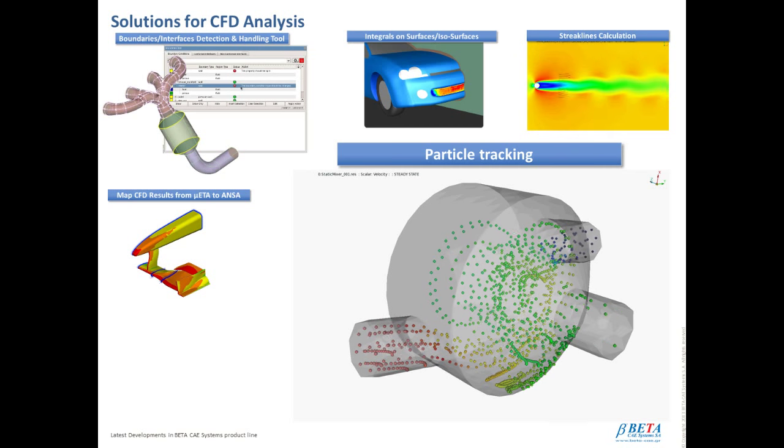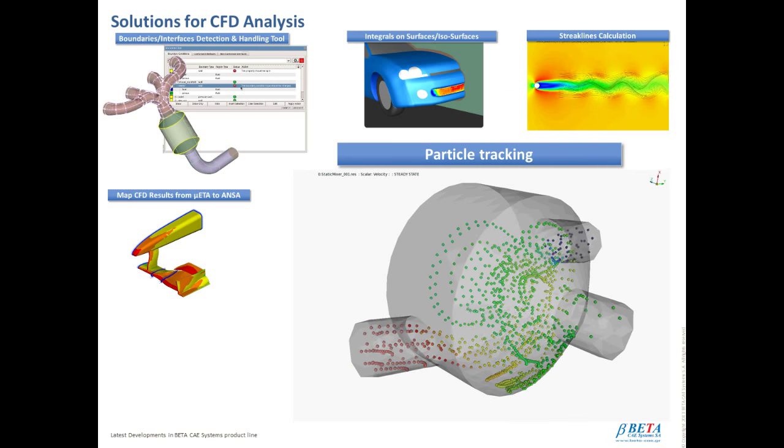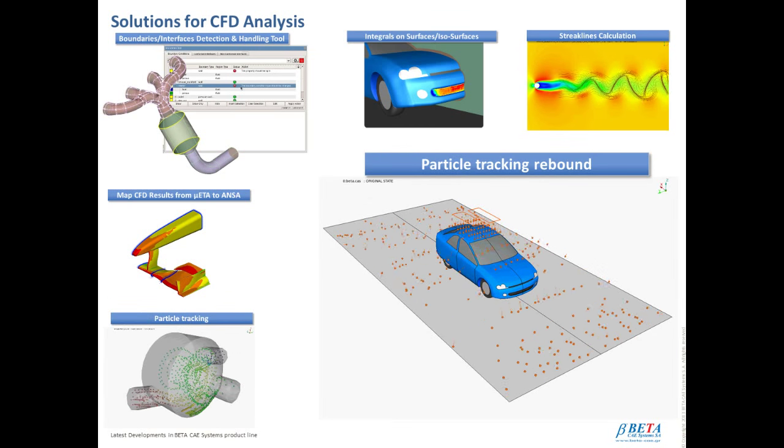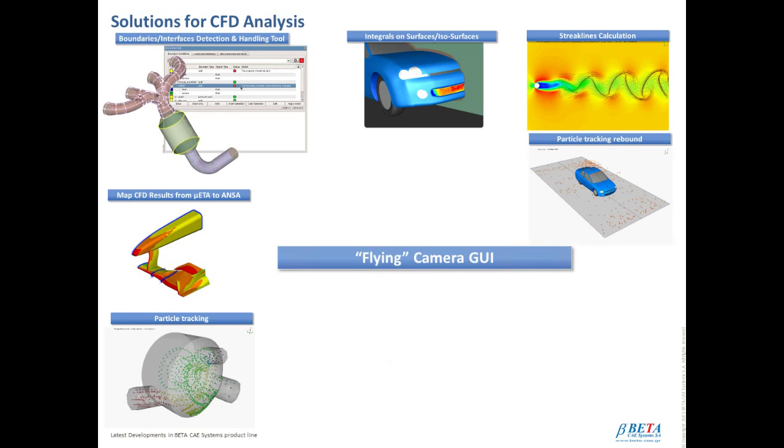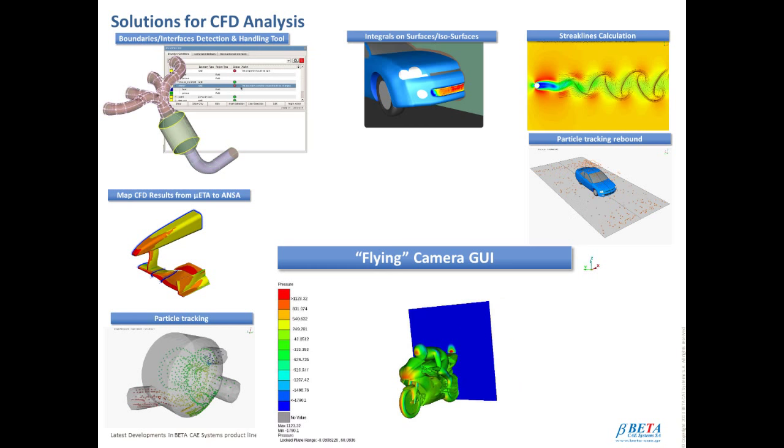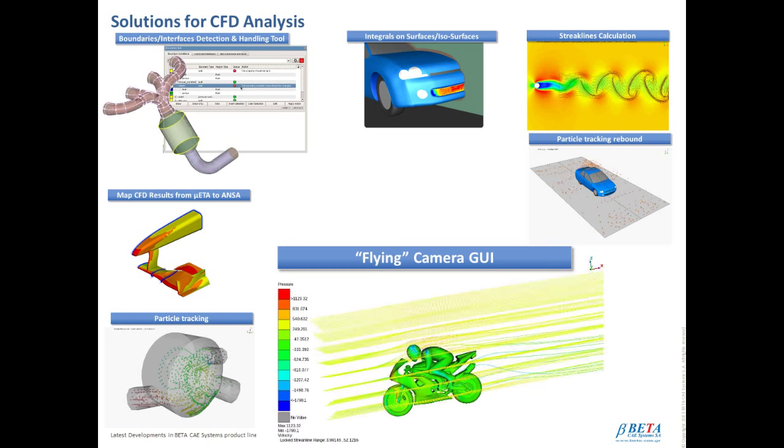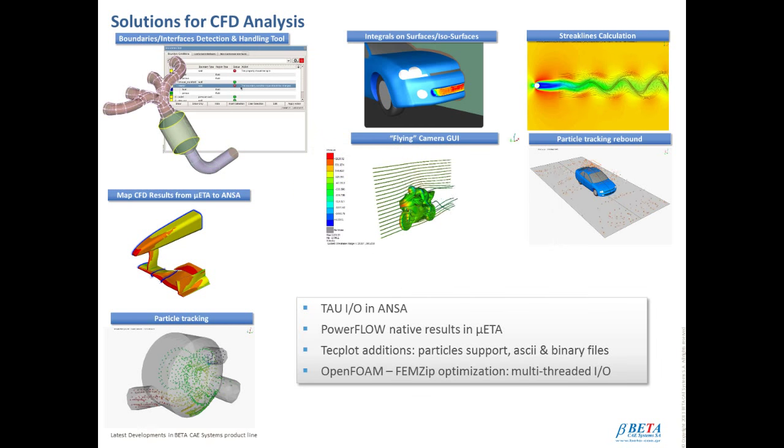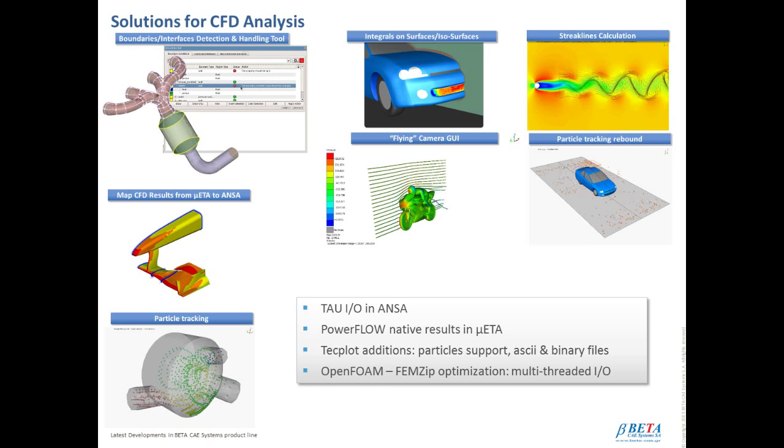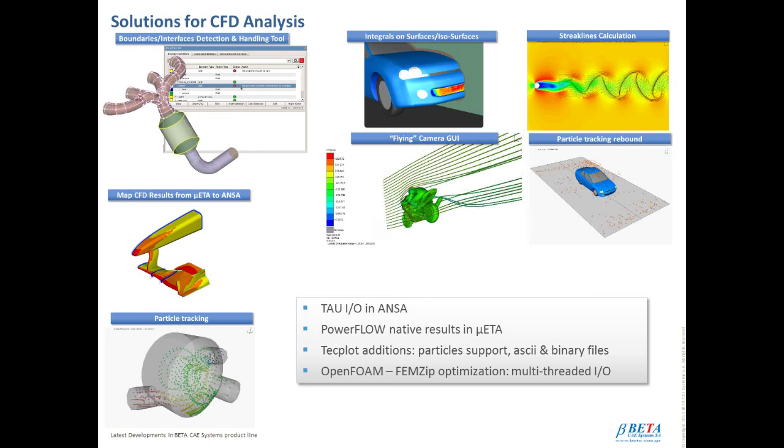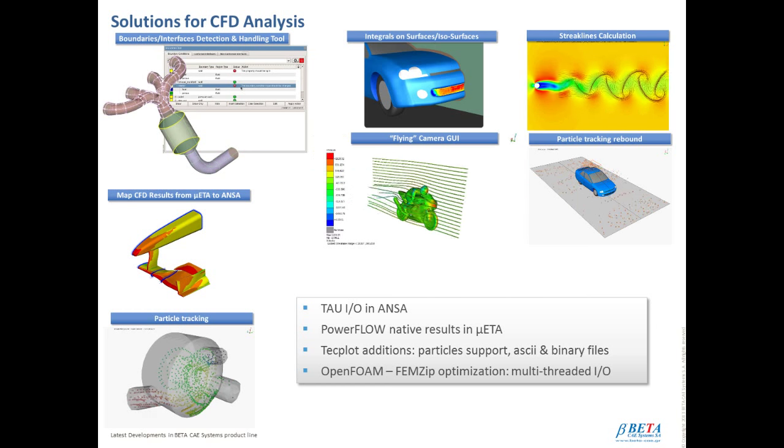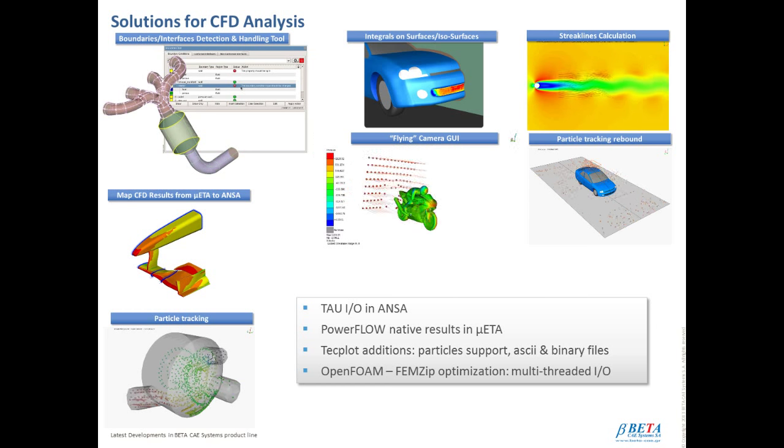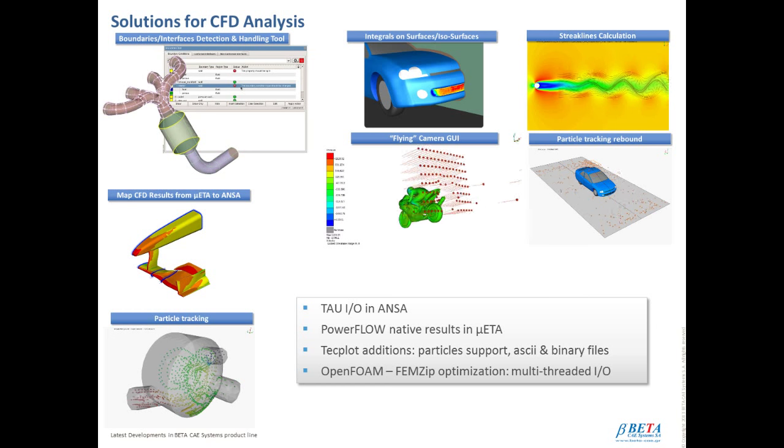Particle tracks can be calculated by META, based on gravitational and drag forces, with the additional feature of particle tracking rebound. A new feature for CFD and not only application, the flying camera GUI is also introduced with ANZA version 16. And not to be missed, significant developments, such as the full support of TAO input output files in ANZA, as well as the Powerflow native results in META. Fieldview files are supported and have been further enhanced with particle supports, asking binary files, as well as OpenFOAM FEM-ZIP files are supported and have been further optimized with multi-threaded input output.